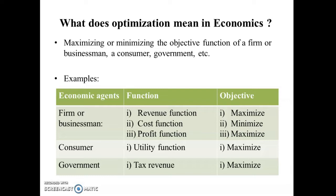What does optimization mean in economics? Optimization means maximizing or minimizing the objective function of a firm, a businessman, a consumer, a government, and so on. For example, a firm always wants to maximize its profit, so profit maximization is its objective function. Similarly, cost minimization and revenue maximization may be other objective functions for a firm or businessman. Likewise, a consumer wants to maximize utility, and for the government, tax revenue maximization may be an objective function.